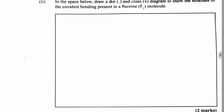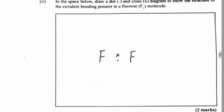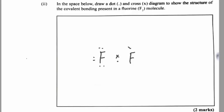In the space provided, draw a dot and cross diagram to show the structure of covalent bonding in a fluorine molecule. We use dots for one fluorine atom and crosses for the other, showing only the electrons in the outermost shells.